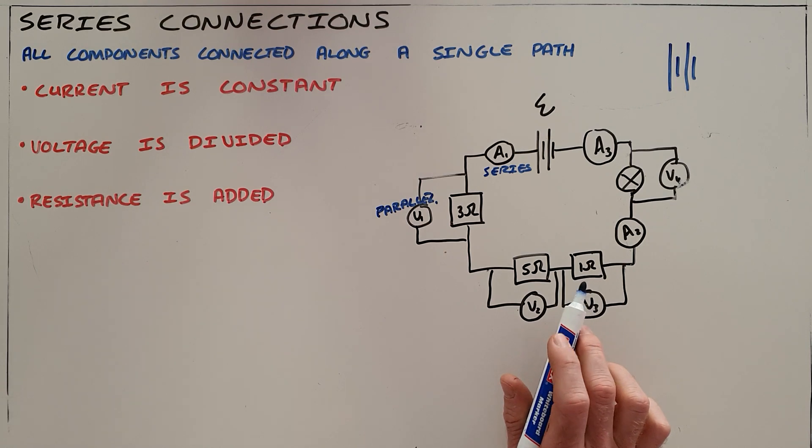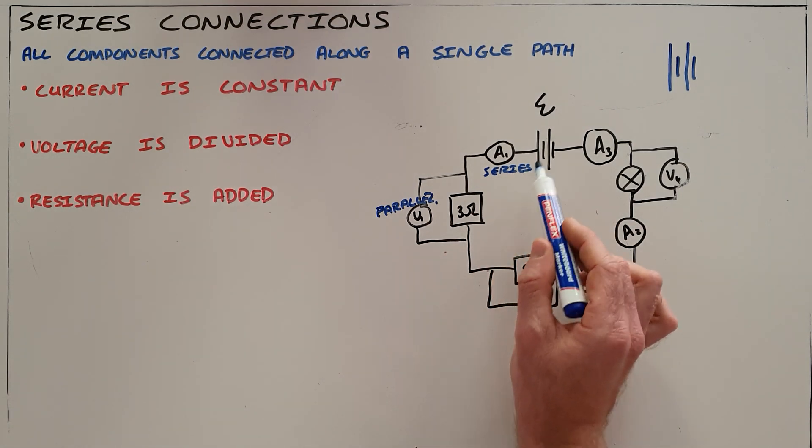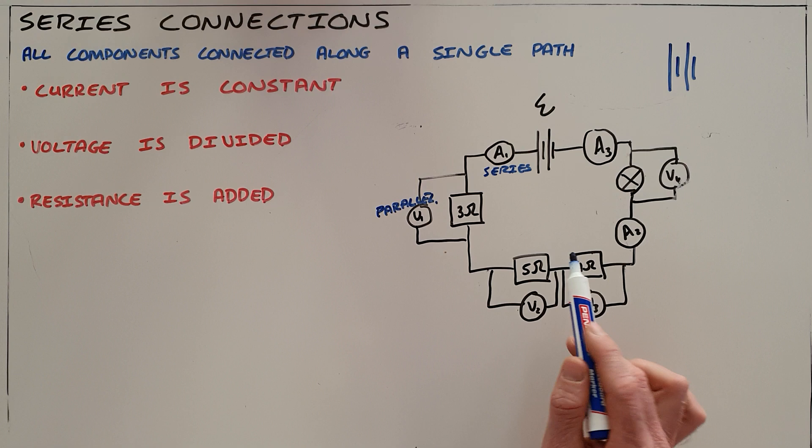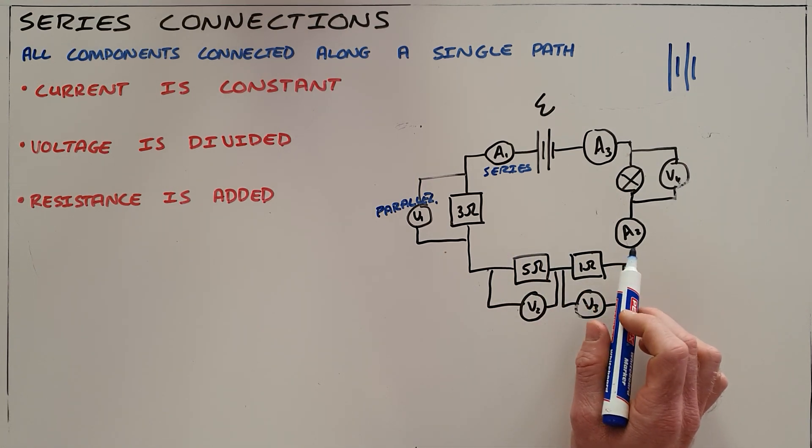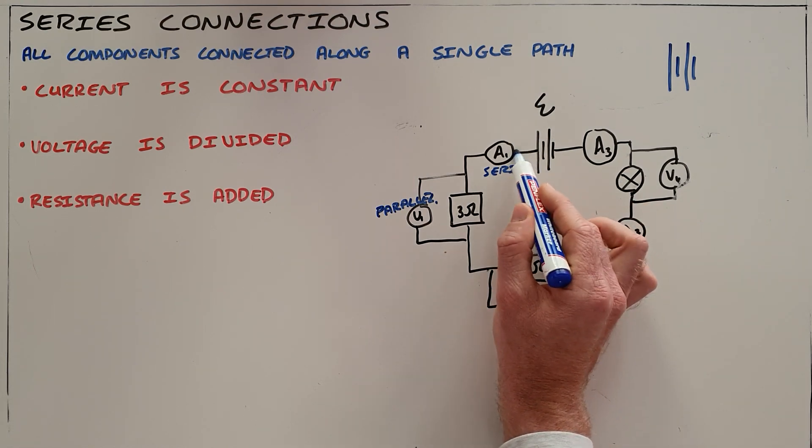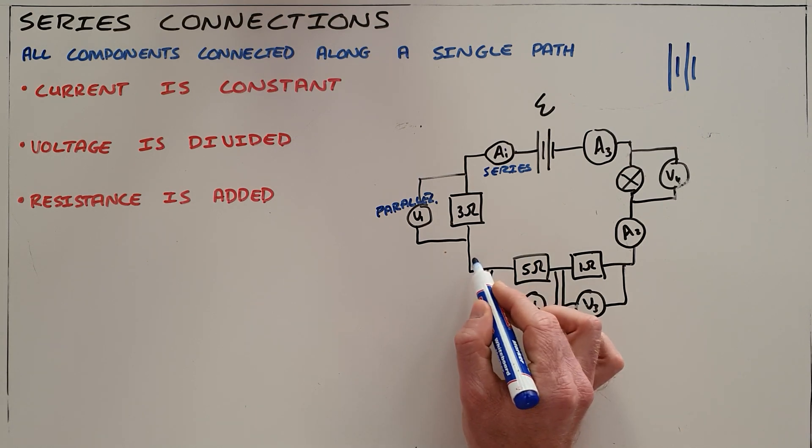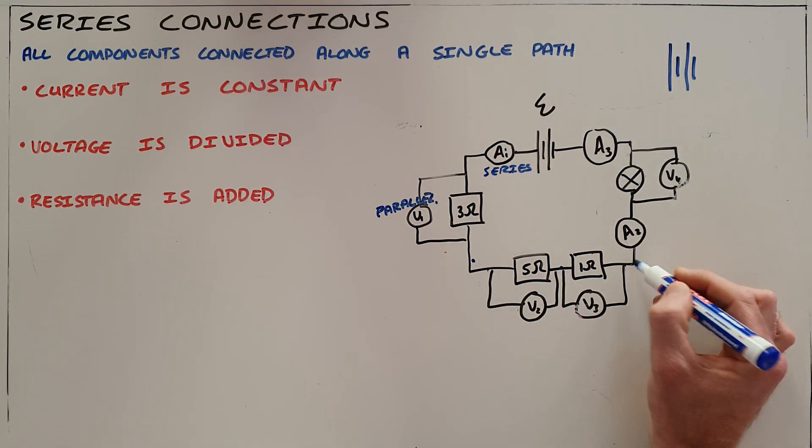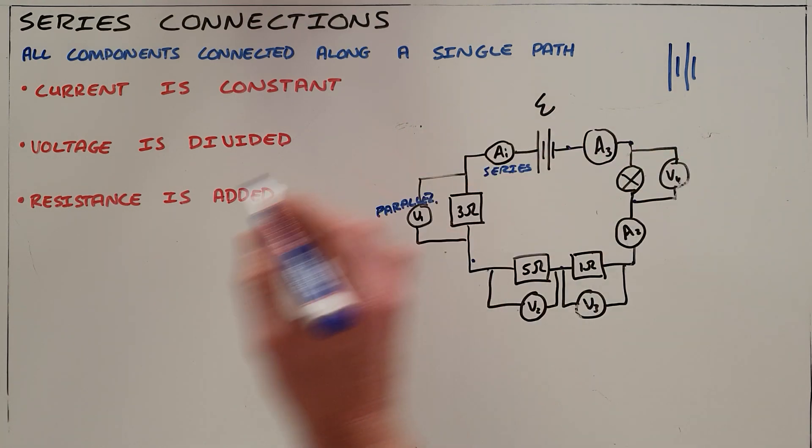There are three rules for series circuits. The first is that current is constant in a series circuit. The reason for this is because the current can only follow a single path—there are no options for the current to increase or decrease as it goes a different route. So what we say here is that the current in one place in a circuit, say for example at ammeter A1, will be exactly the same as the current in every other part of that circuit because there is only a fixed path.